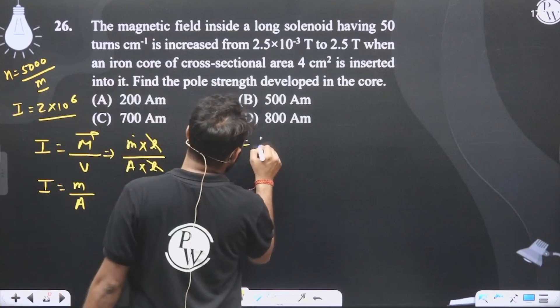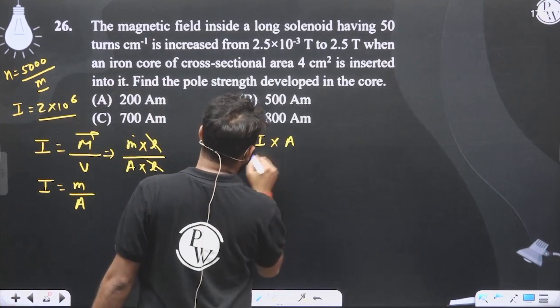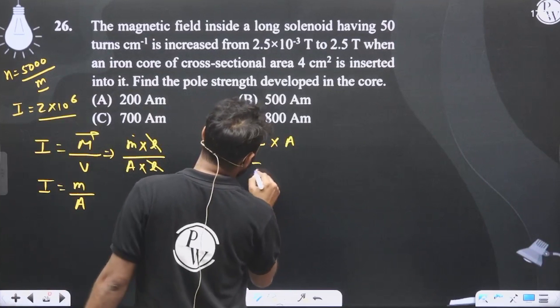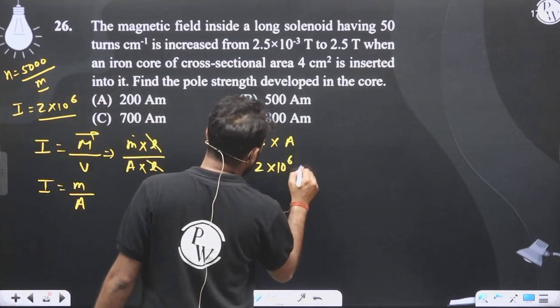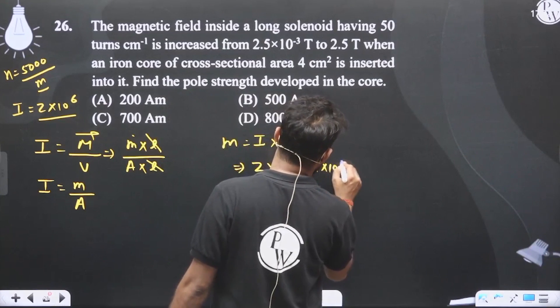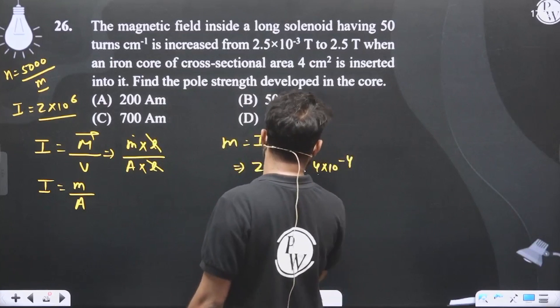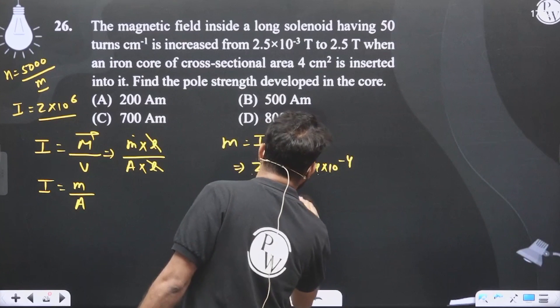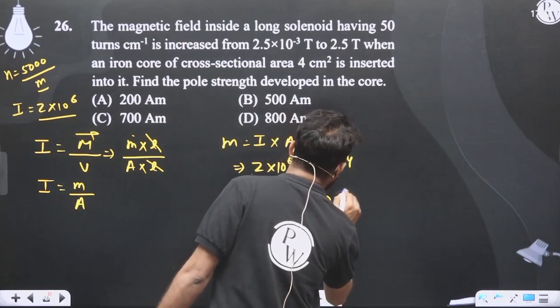So here pole strength will be I into area cross-section. I value we have from the last question, 2 × 10^6. Cross-section area here is 4 centimeter square, so 4 × 10^-4. So it will be nothing but 8 × 10^2, which is nothing but 800.